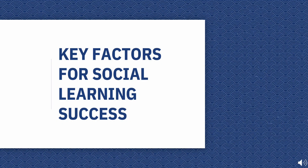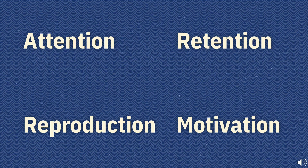There are four key factors for social learning success. The first one is attention. In order to learn, you need to be paying attention. Anything that distracts your attention is going to have a negative effect on observational learning. If the model is interesting or there is a novel aspect of the situation, you are far more likely to dedicate your full attention to learning.